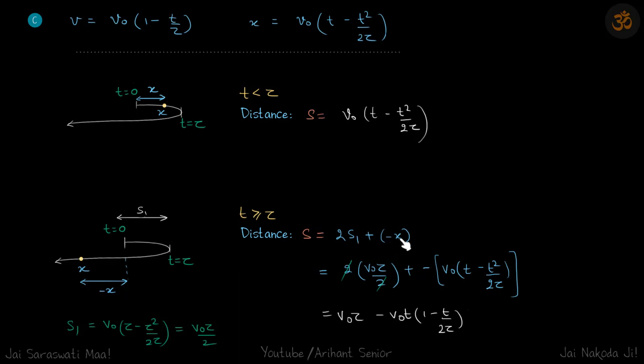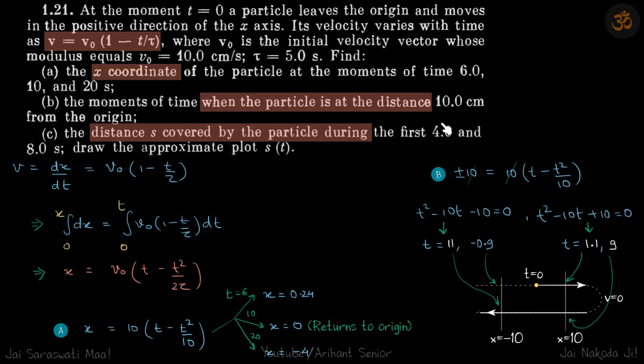s₁ is the displacement when its velocity is zero. From the first equation we'll get s₁. If you put tau at tau time, velocity is zero, so we get s₁ is v₀ tau by 2. If we put that value here and for minus x we'll put the value here, this will be our answer. If you put the given values, you will get the answer.